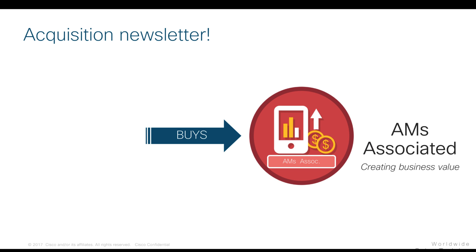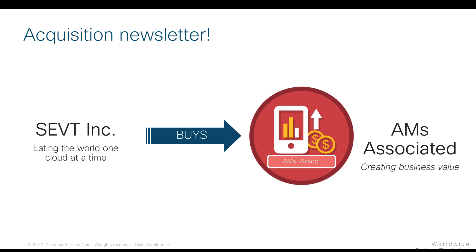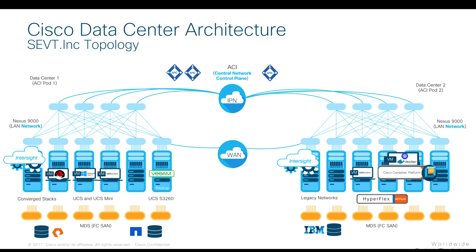In this case, our example started a company called SCVT Inc, but acquired another company called AMs Associated, and we need to make sure that we integrate it as seamlessly and quickly as possible. As you may have seen in the high availability video, SCVT Inc currently runs our business on a multi-data center topology with ACI in a multi-pod fashion, and UCS-based converged systems as well as Hyperflex running multiple hypervisors and container-based workloads, which are currently being managed and provisioned from the cloud by Intersight.